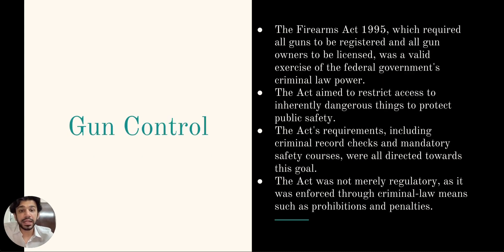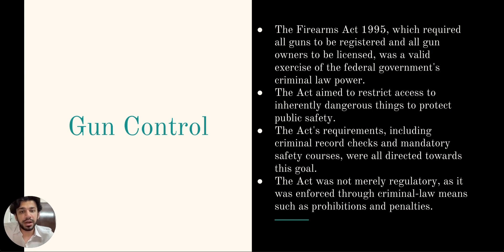The Firearms Act 1995, which regulated all guns to be registered and all gun owners to be licensed, was a valid exercise of the federal government's criminal law power. The purpose of the Act was to restrict access to inherently dangerous things in order to protect public safety. The Act's requirements including criminal law record checks and mandatory safety courses were all directed towards that goal. The court also determined that the Act was not merely regulatory and was enforced through criminal law means such as prohibitions and penalties.